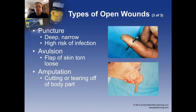Puncture wounds are very deep and narrow, and bacteria on the skin plus any foreign bodies on the puncturing object tend to get driven into the wound, making them high risk for infection. Avulsions are where the skin and possibly some underlying structures are partially torn free but not completely removed — more like flaps. An amputation is where a complete part of the skin, or all structures underneath, is either cut or torn off entirely.